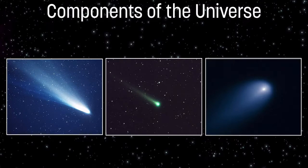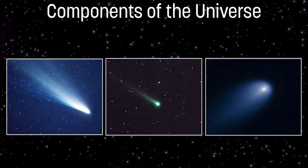Some solids are released and they form visible tails, as seen in these pictures. The picture on the far right is one of the most famous comets: Halley's Comet. Halley's Comet has an orbit around the sun that places it in our viewing position from Earth every 75 years. The last time we saw Halley's Comet was back in 1989, and it will come back around 75 years from that date.